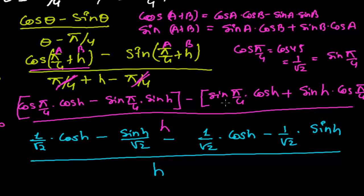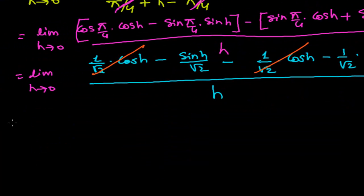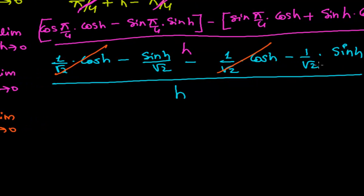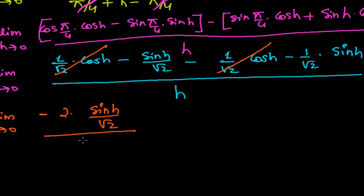Now observe: the (1/√2)·cos h and −(1/√2)·cos h terms cancel each other. Taking the limit as h tends to zero, we are left with −sin h/√2 − sin h/√2, which equals −2·sin h/√2, all divided by h.